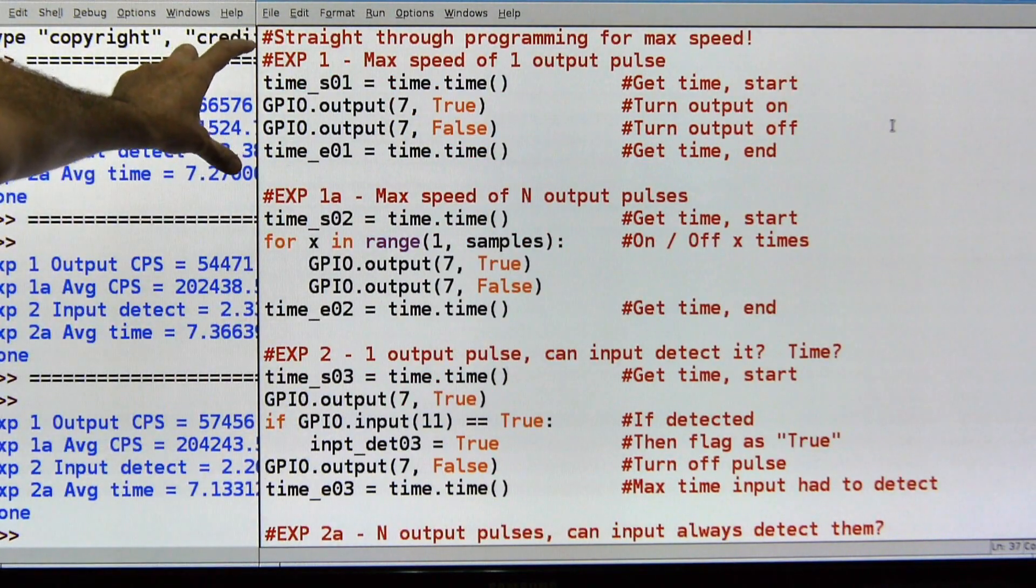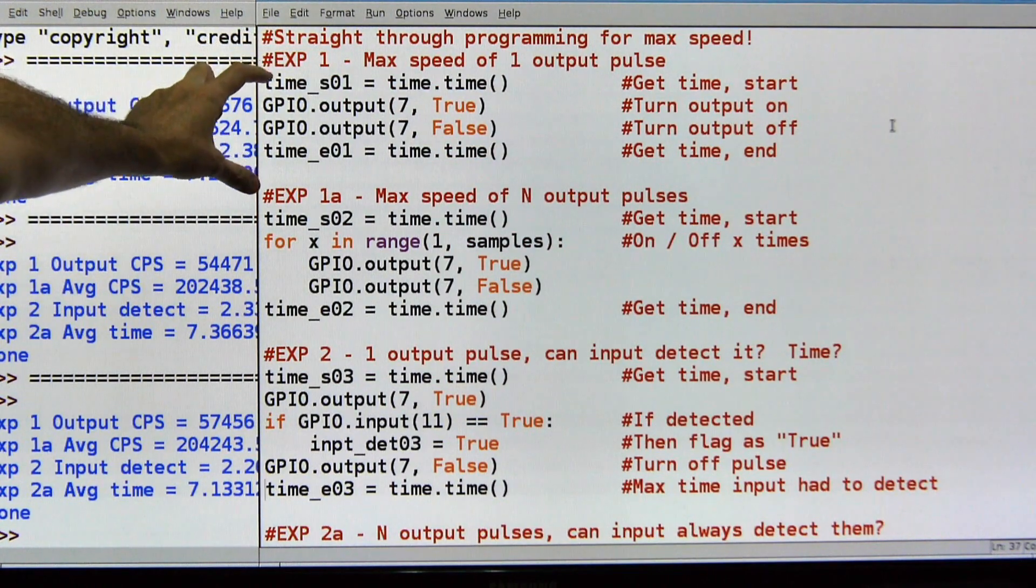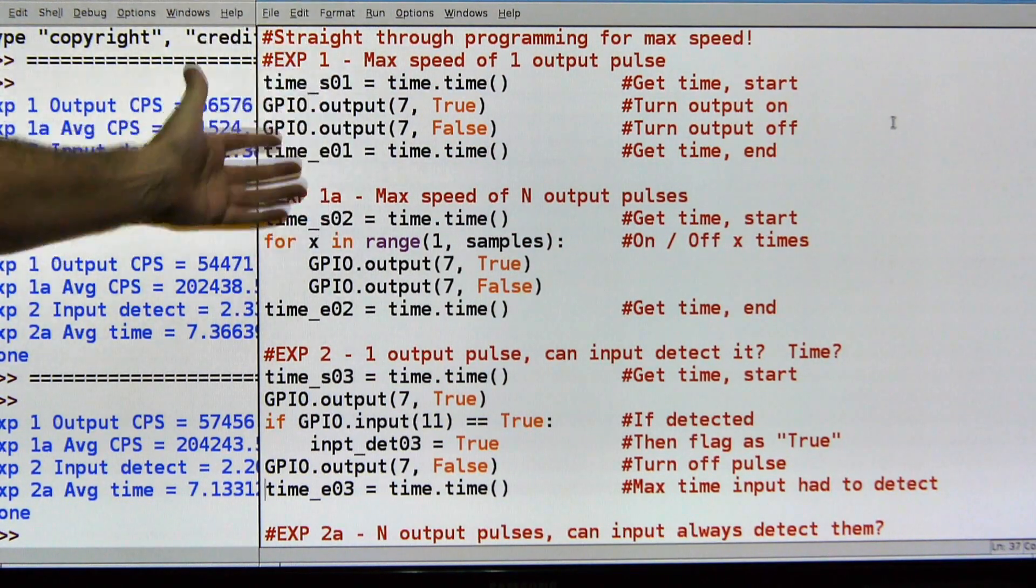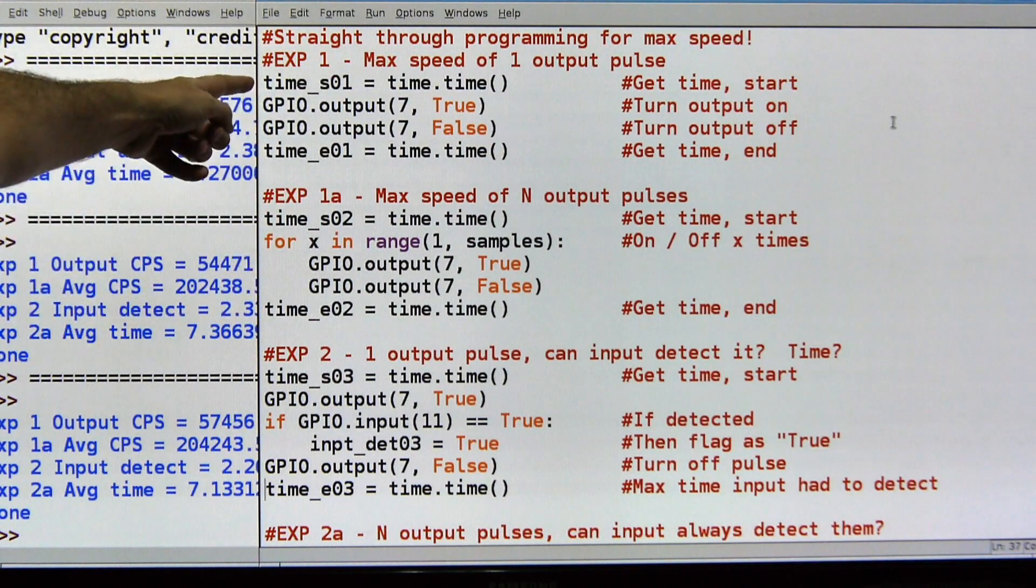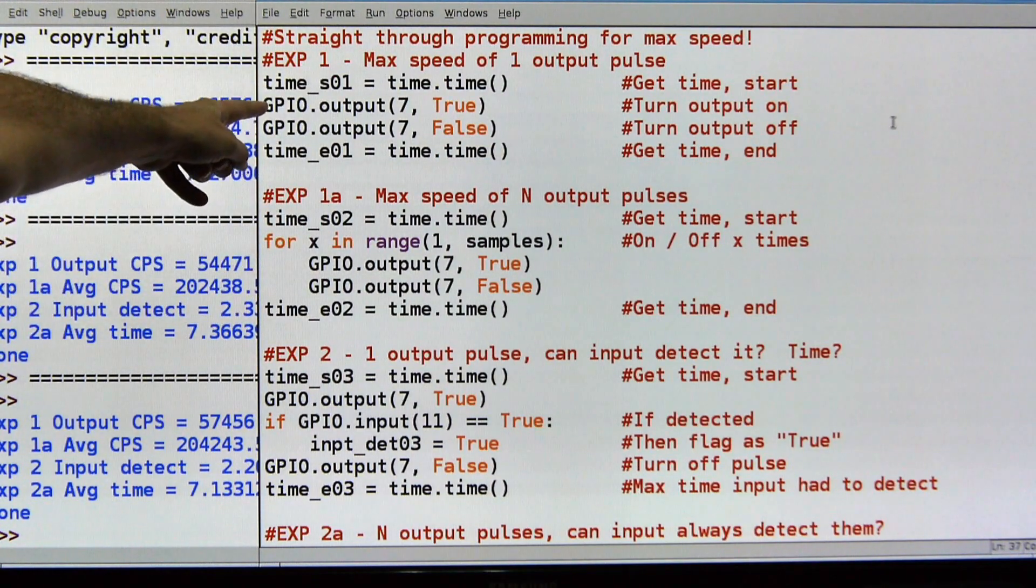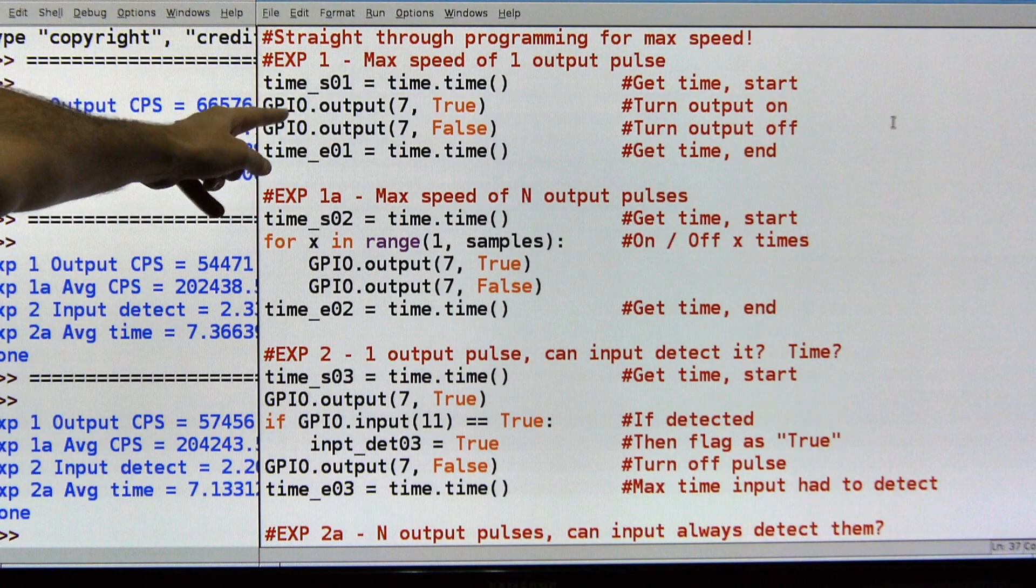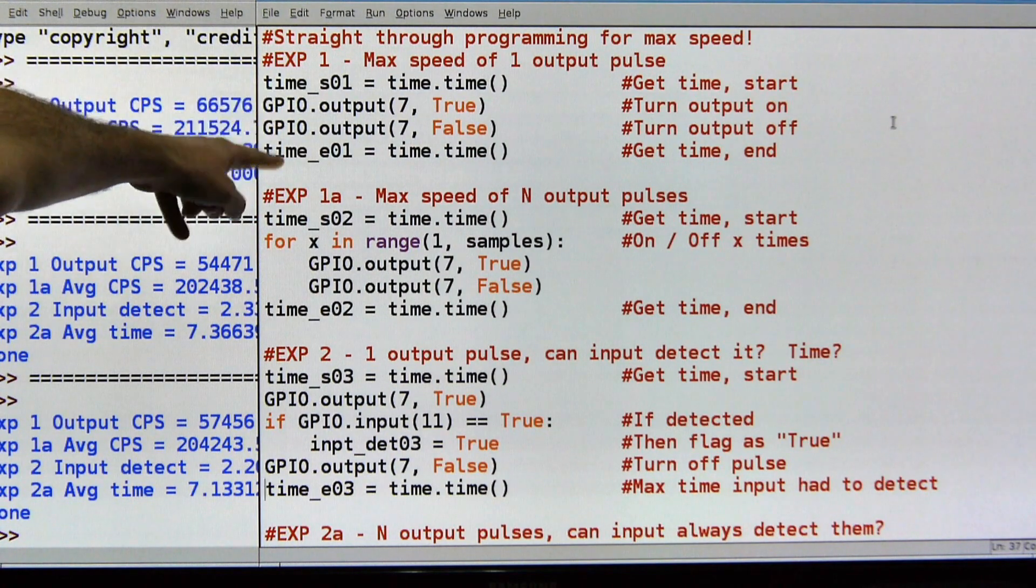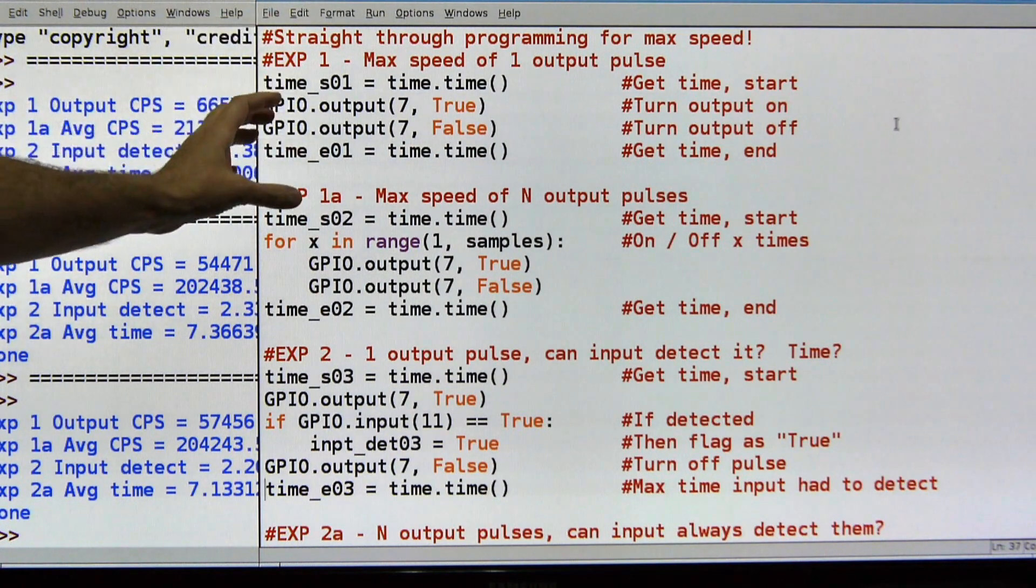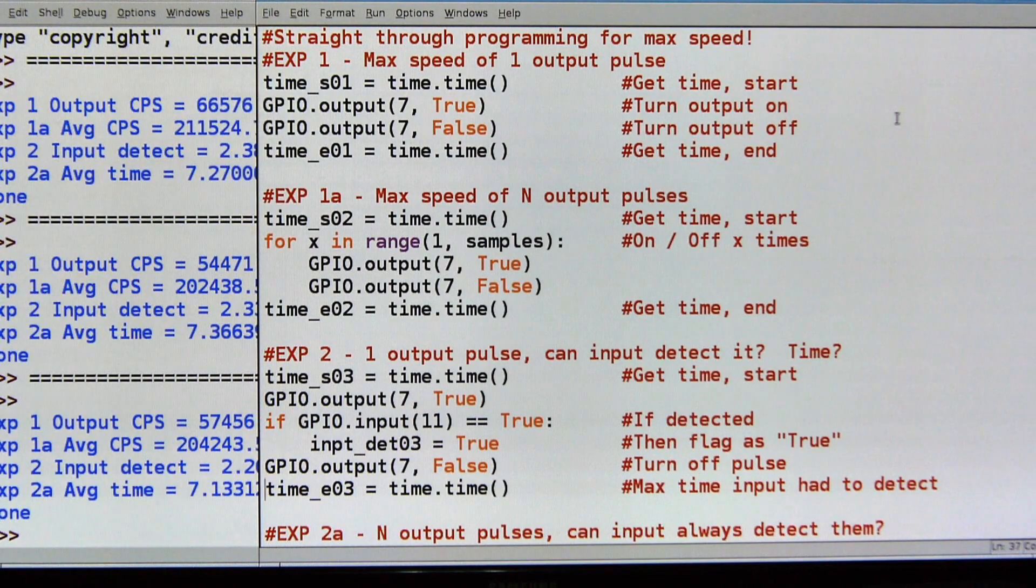This is the program I wrote to measure the speed. It's just looking at the GPIO pins, how fast are they really. I disconnected the Wi-Fi out of it, and I've got pin 7 and pin 11 wired together. Pin 7 is the output, pin 11 is the input. Some variables I need, we won't go over all that detail. I'm going to run 10,001 samples and I'm just going to write straight through code so that it's as fast as it can possibly be.